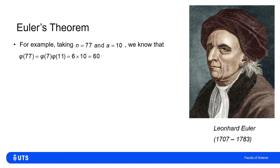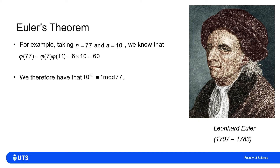Taking two co-prime numbers n equals 77 and a equals 10: since phi of a times b equals phi of a times phi of b, phi of 77 equals phi of 7 times phi of 11. Both 7 and 11 are prime, so phi of 7 is 6 and phi of 11 is 10, giving phi of 77 equals 60. That means 10 to the power of 60 is 1 mod 77.